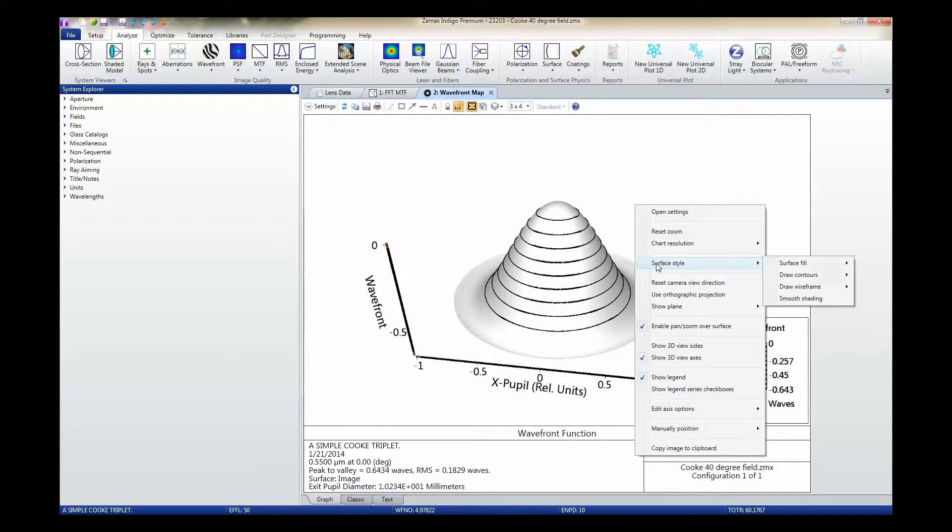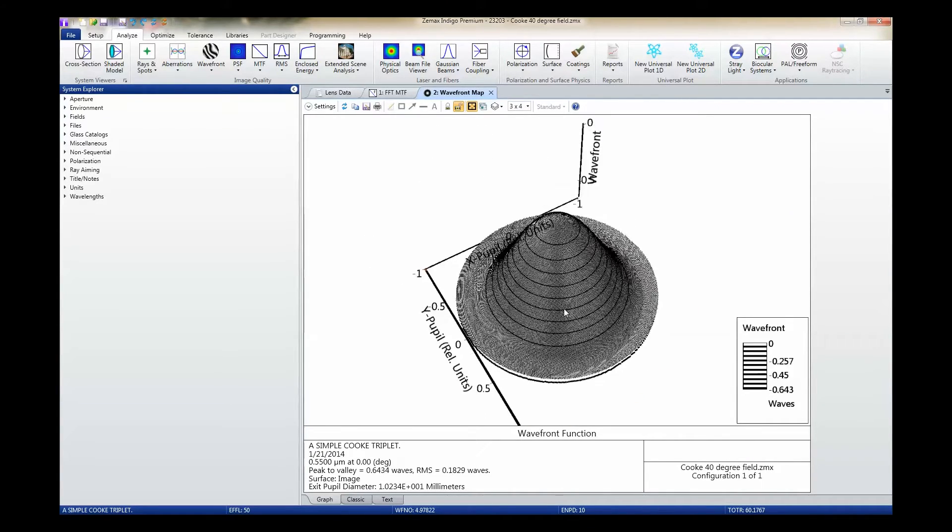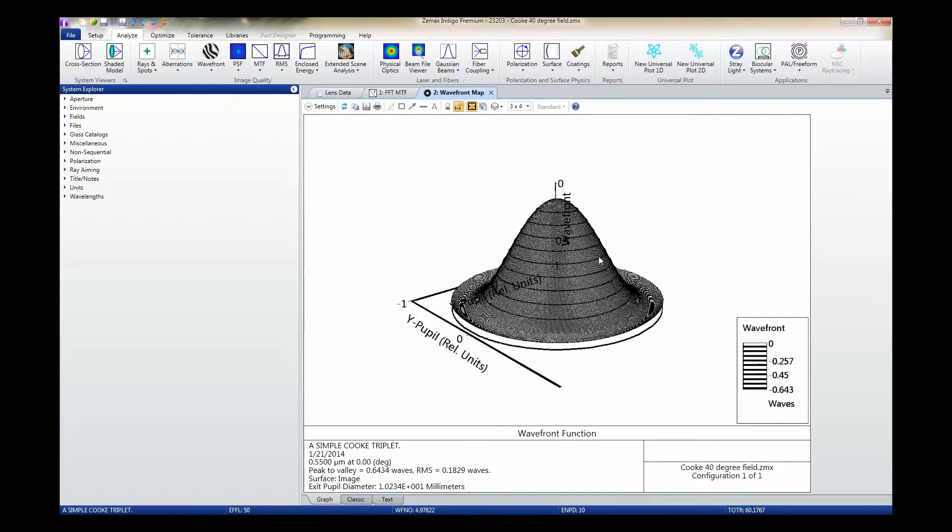We can also add a wireframe on top of this plot, which provides a little bit of visual acuity to the plot and provides a little bit of distinction as we're rotating the view.